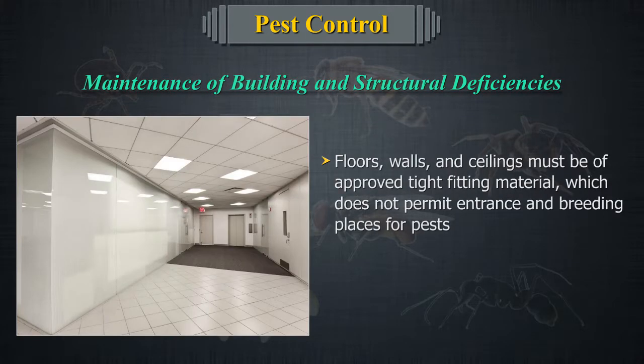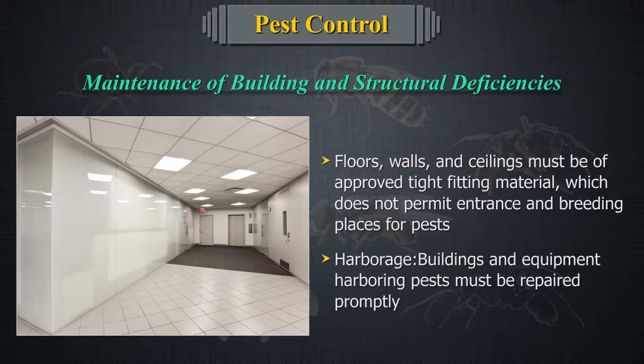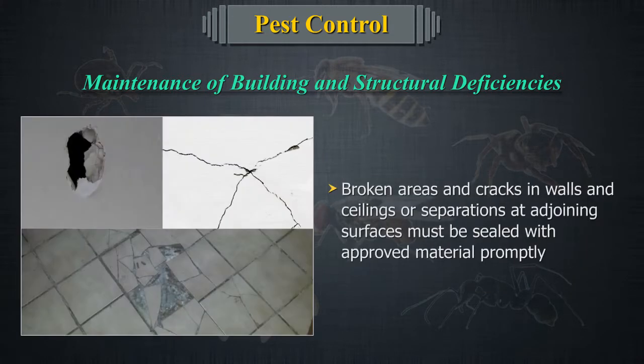Floors, walls, and ceilings must be of approved tight-fitting material which does not permit entrance and breeding places for pests. Harbourage: buildings and equipment harbouring pests must be repaired promptly. Broken areas and cracks in the walls and ceilings, or separations at adjoining surfaces, must be sealed with approved material promptly.